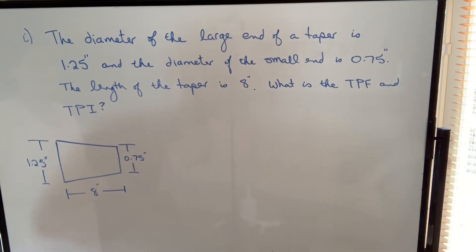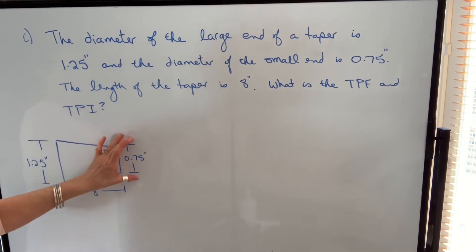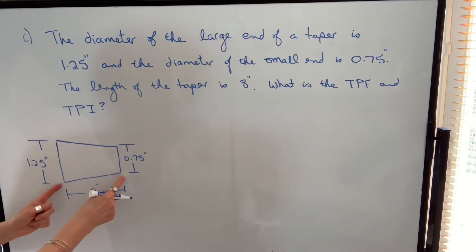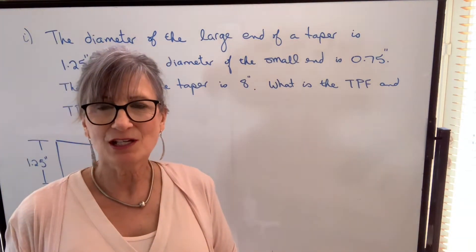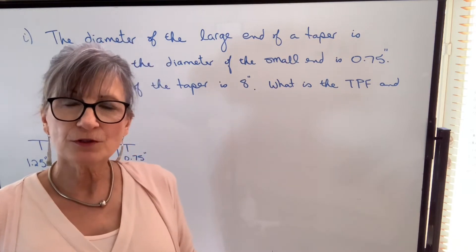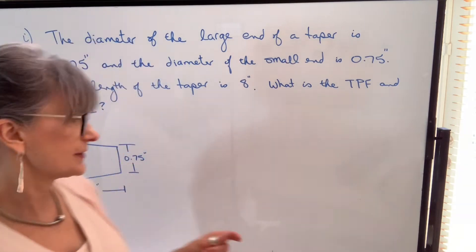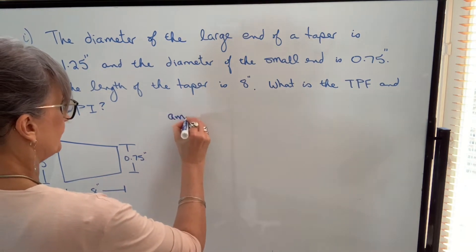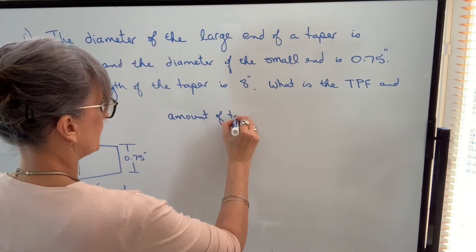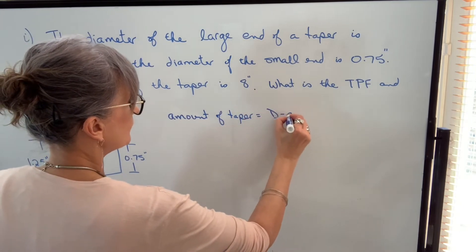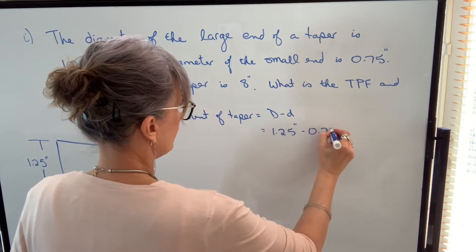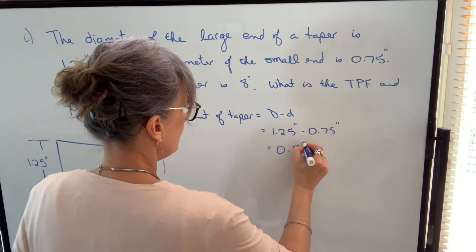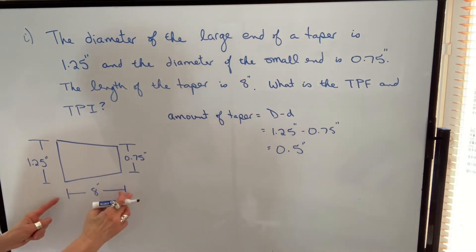In our first example, the diameter of the large end of a taper is 1.25 inches, the diameter of the small end is 0.75 inches, and the length of the taper is 8 inches. The question asks: what is the taper per foot, and what is the taper per inch? First, we need to find the amount of taper over 8 inches, which we find by taking the difference in the diameters: 1.25 inches minus 0.75 inches. So the amount of taper in this example is half an inch over a length of 8 inches.